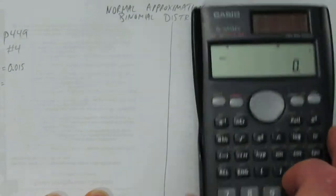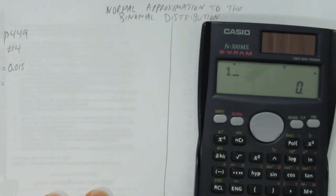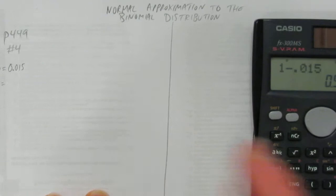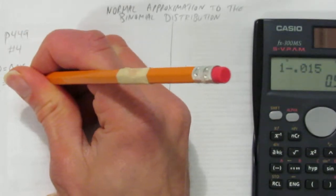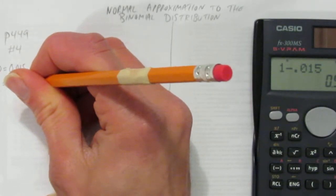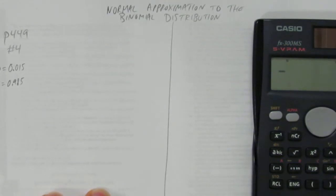What's the probability of failure? Just one take away that, which is 0.985. So far so good. We have the probability of success and the probability of failure.